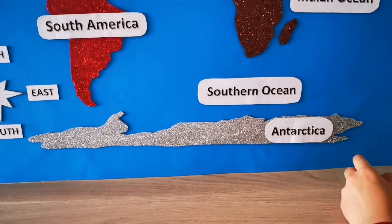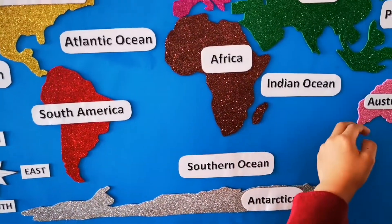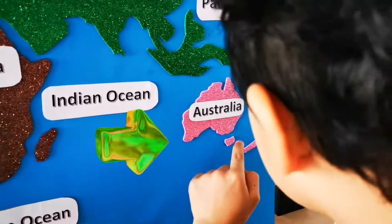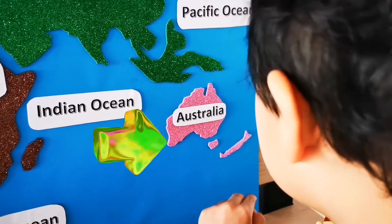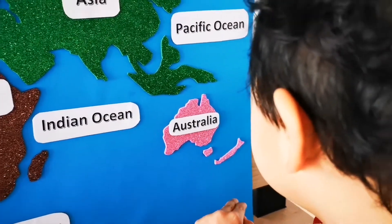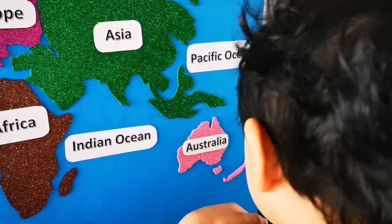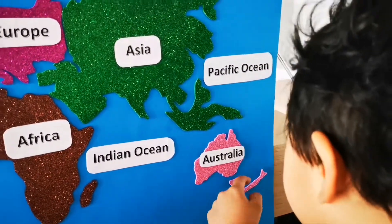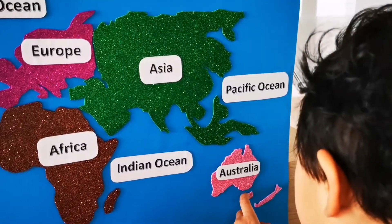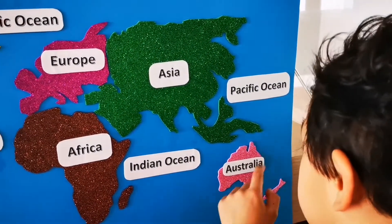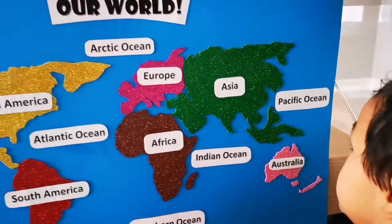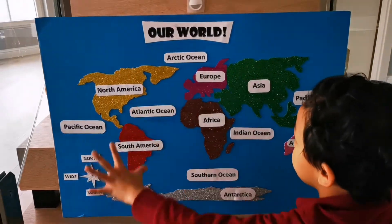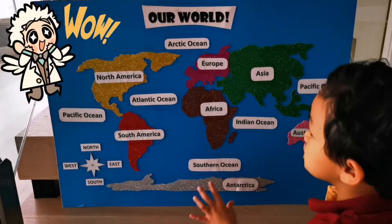Australia is the smallest one. I know New Zealand and Australia — because, look, I remembered it. Here, island, here, island, here, island. You see, there's a big continent.